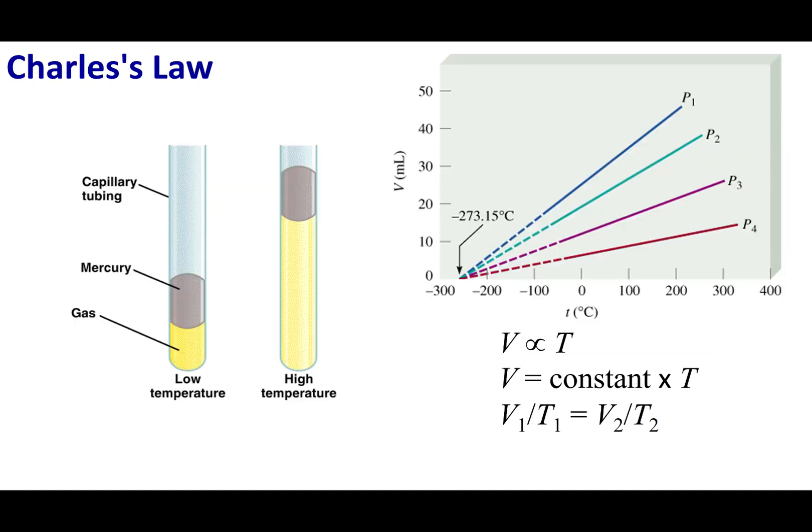Charles did a very slick experiment. He was interested in volume and temperature. He put a drop of mercury right above a volume of gas. The drop of mercury applies a constant pressure, so volume and temperature are the only variables. He measured the volume at low temperature, and when he increased the temperature, he measured the volume again.